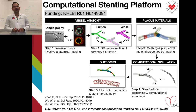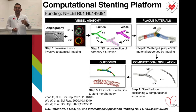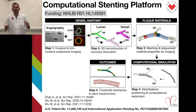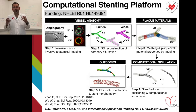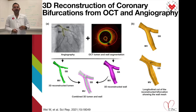Let me get into the specifics of this study. This is the computational stent platform we use to simulate those techniques. We start by merging angiography with OCT to 3D reconstruct the bifurcations. Then we assign plaque-specific material properties coming from OCT. We enter into the system realistic stent designs and balloons, and we run the computational simulation of four different techniques as described. The outcomes of the platform include stent morphometry as well as stent biomechanics.